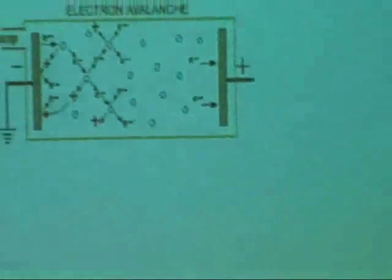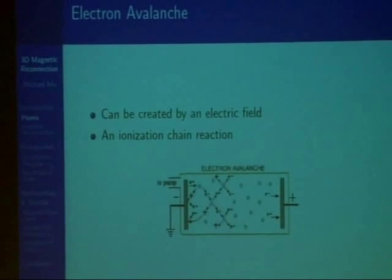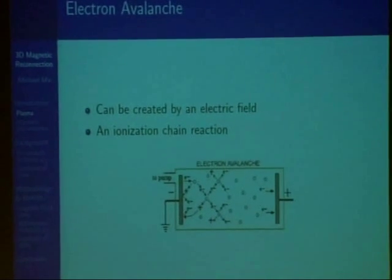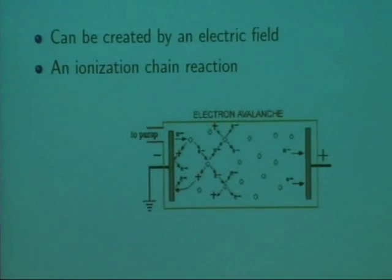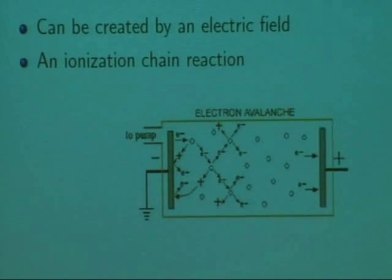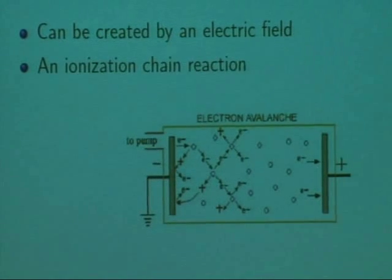In a laboratory setting, plasma can be created using an electric field, which is usually generated by two parallel electrodes. What happens is that the free electrons in the gas get accelerated by this electric field, and then collide with the neutral gas atoms. Electrons get knocked off these gas atoms, and the process repeats. When this happens over and over again, a plasma is eventually generated. This ionization chain reaction is called an electron avalanche, and that's shown here.